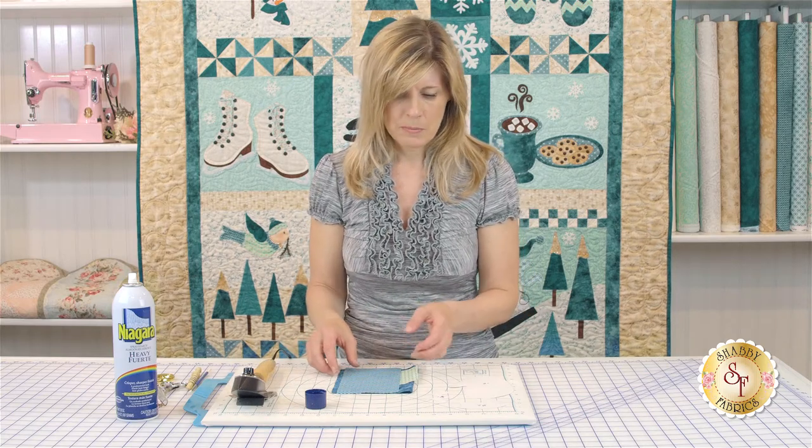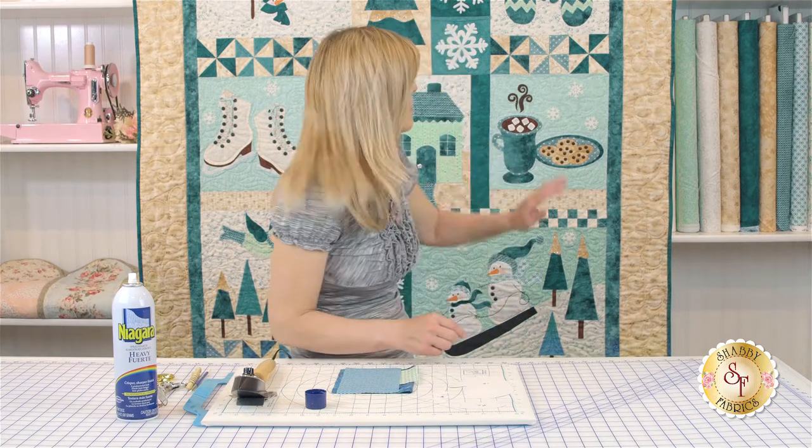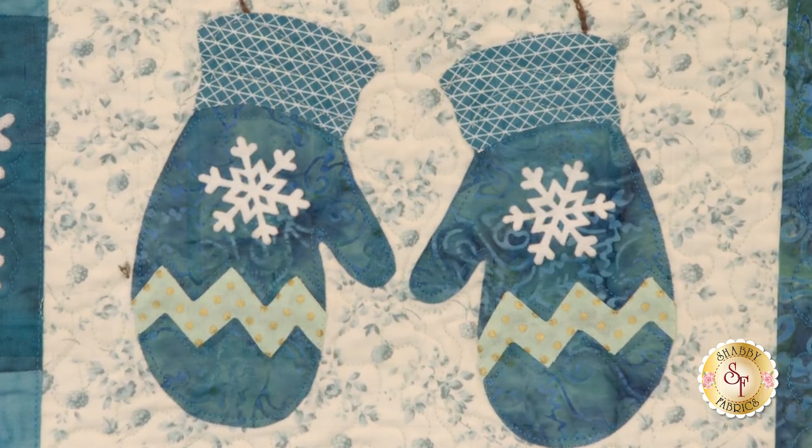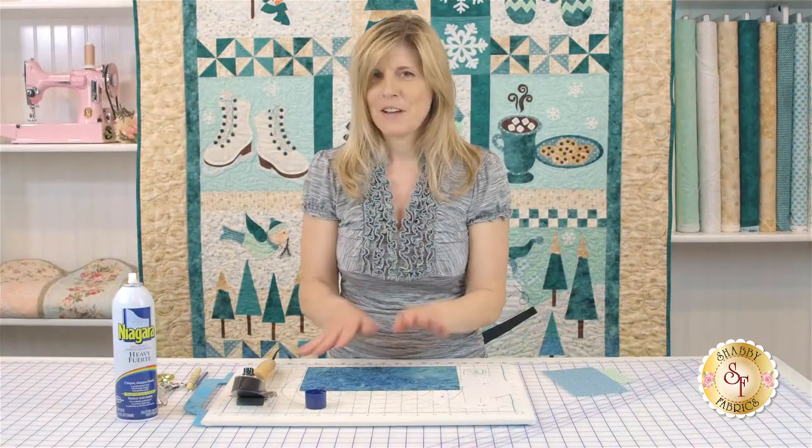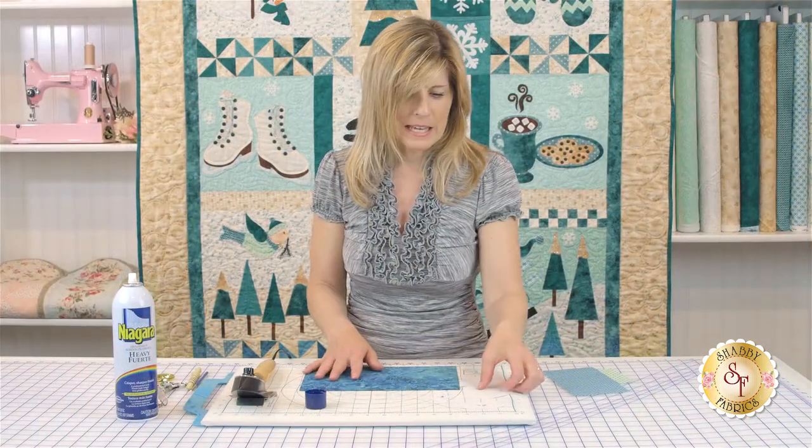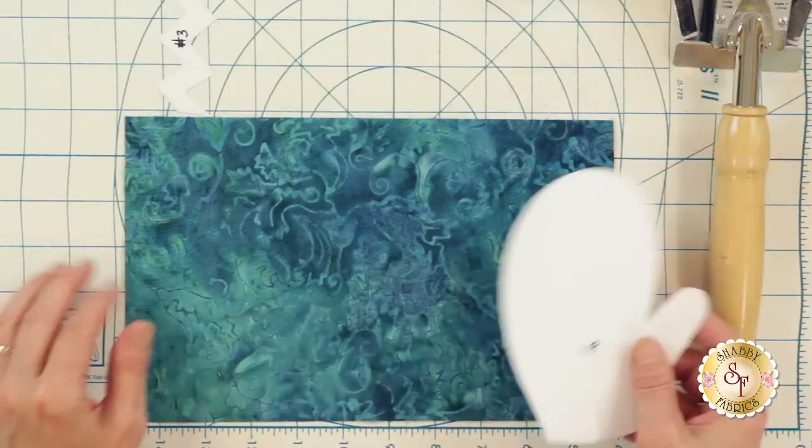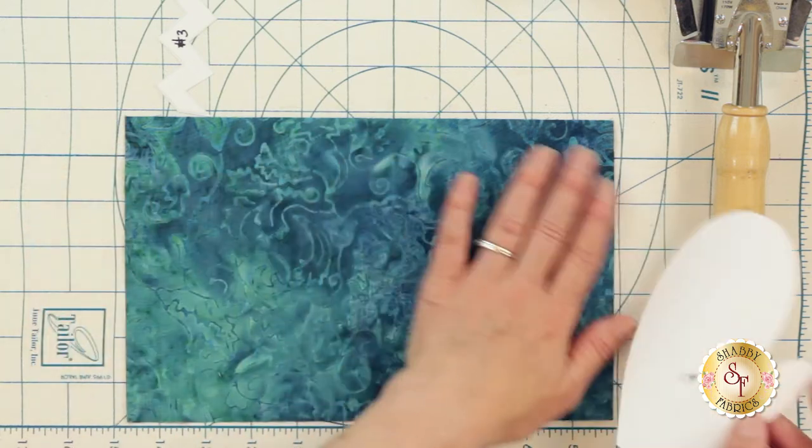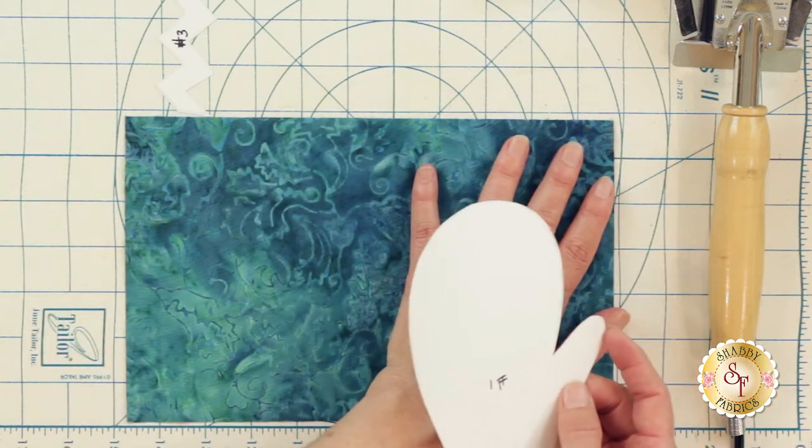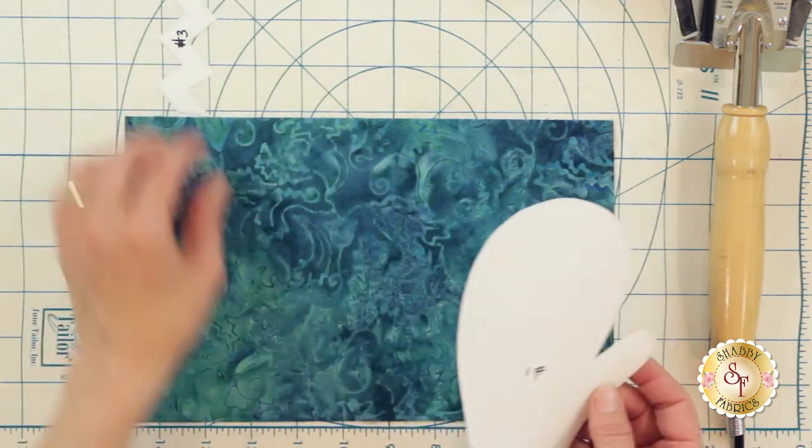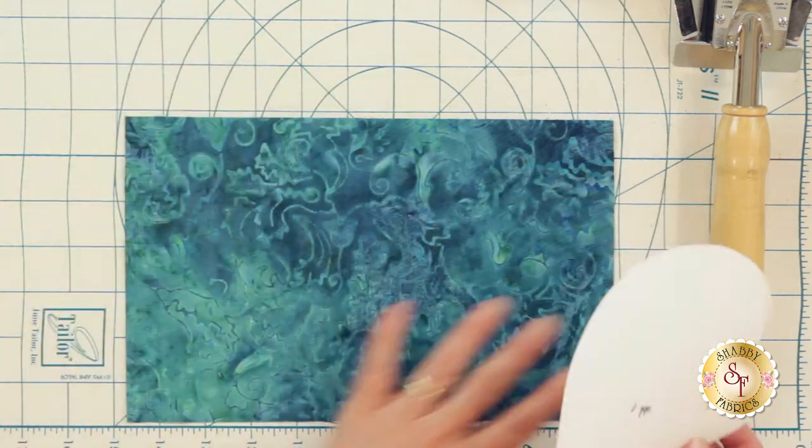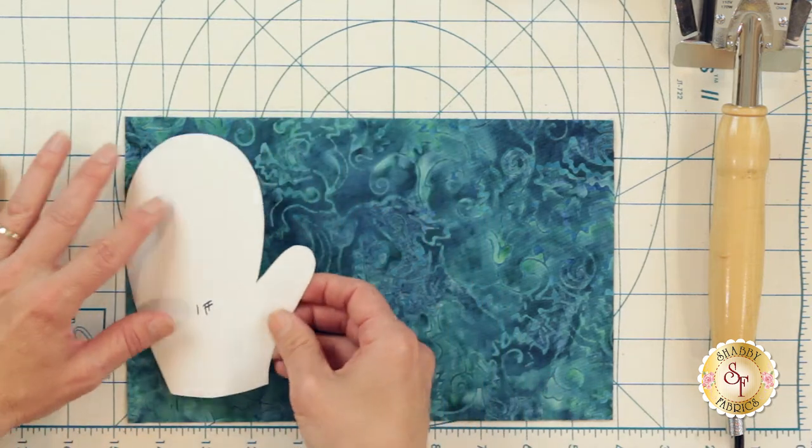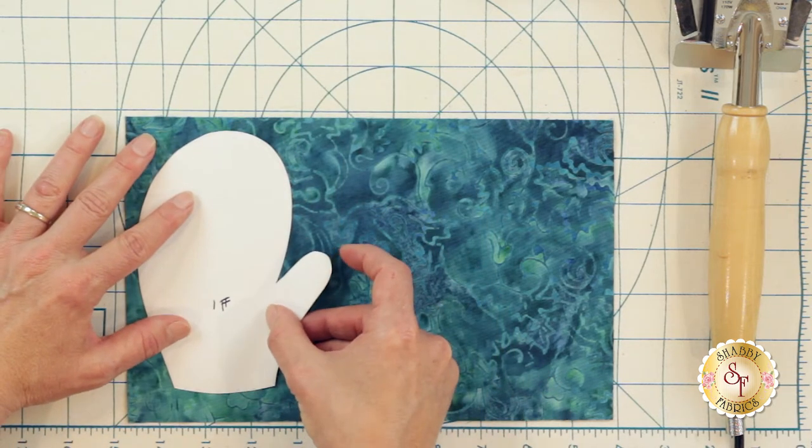So I've got my iron heated up, I've got liquid spray starch, and let's start with the main mitten. In your kit, or if you're choosing your own fabrics, this is the really fun part, especially if you use something like this batik. You can really choose where you want this to hit. If I like this area, this transition, which I do, I'm going to put that here. So let's just place that in position.